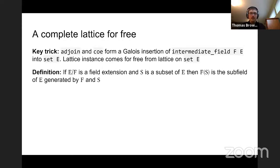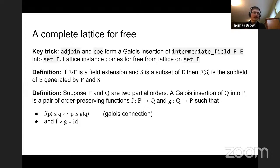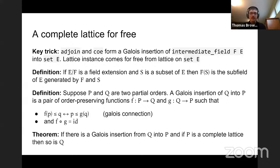The key fact is that there's something called a Galois insertion, and the adjoining map and coercion backwards form one of these Galois insertions — which allows you to get a complete lattice structure for free. To be precise: if you've got a field extension and a subset of the top, you can adjoin those elements to the bottom and look at the smallest subfield of E containing the base field and that new set. A Galois insertion is an order-theoretic notion — a pair of order-preserving functions between two partial orders with a symmetric Galois connection property and an asymmetric property where one is a left inverse of the other.